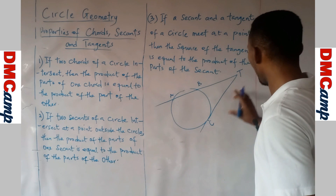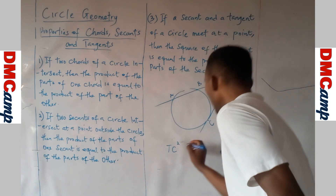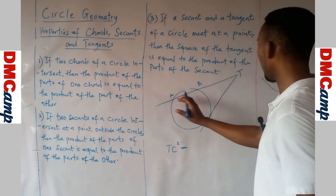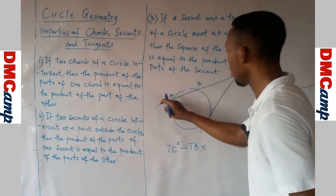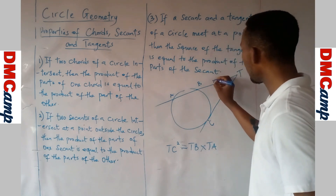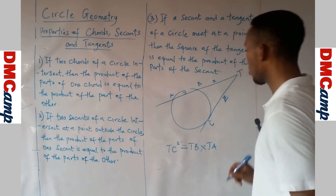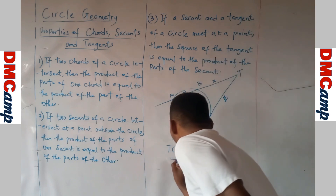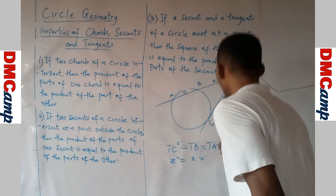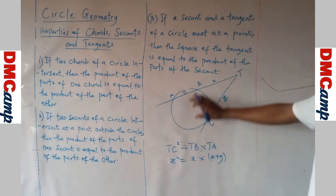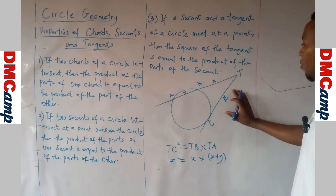The square of the tangent TC is equal to the product of the parts of the secant. If we represent TC as Z, TB as X, and TA as X plus Y, then Z squared equals TB multiplied by TA — that is, Z² = X multiplied by (X + Y). So the product of the parts of the secant is equal to the square of the length of the tangent. This is another formula to remember.